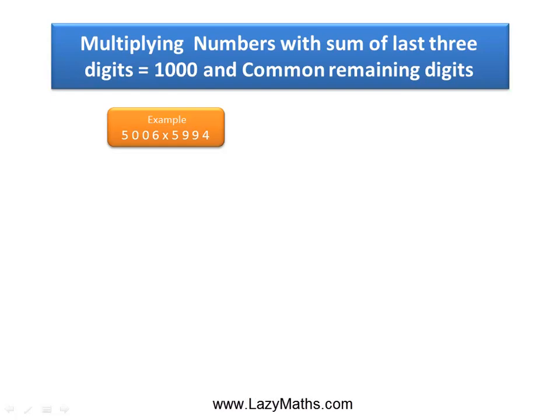Here's an example of multiplying numbers with sum of last three digits equals to 1000 and common remaining digits. 5006 times 5994.